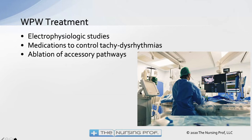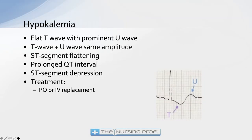We may also give medications to control tachydysrhythmias depending on which pathway and what dysrhythmia results from WPW. Just a couple of common electrolyte issues to be aware of for the exam — one is hypokalemia, obviously a low potassium level, which has specific EKG findings to recognize.